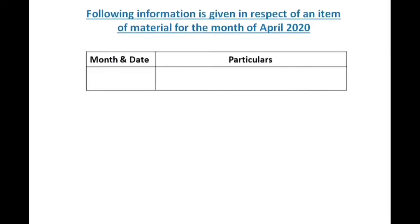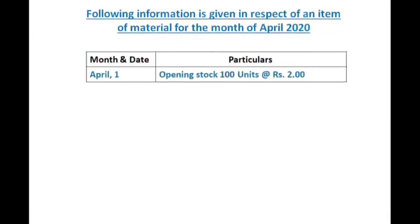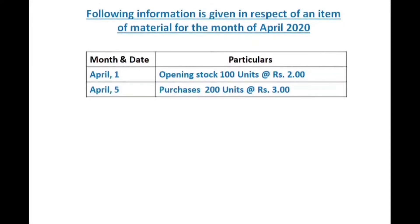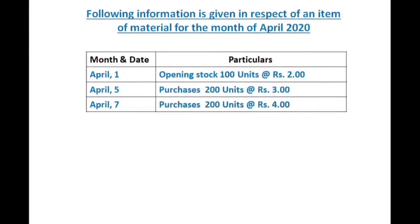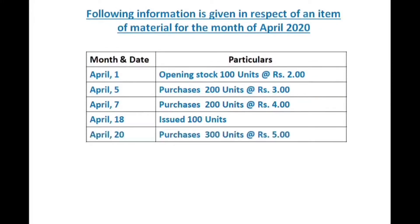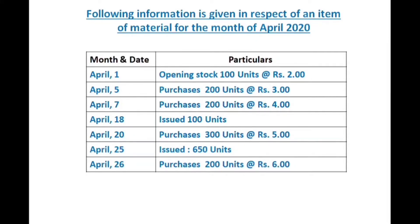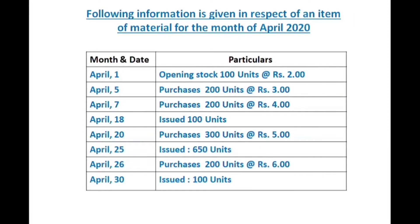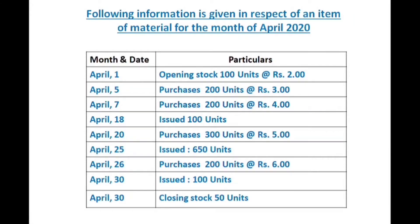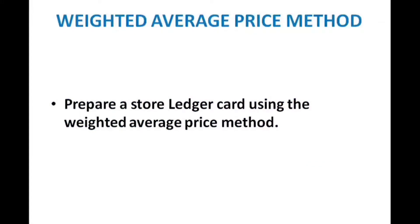The following information is given in respect of an item of material for the month of April 2020. April 1: Opening Stock 100 units each 2 rupees. April 5: Purchases 200 units each 3 rupees. April 7: Purchases 200 units each 4 rupees. April 18: Issued 100 units. April 20: Purchases 300 units each 5 rupees. April 25: Purchases 500 units. April 25: Issued 650 units. April 26: Purchases 200 units each 6 rupees. April 30: Issued 100 units. April 30: Closing Stock 50 units. Prepare the store ledger card using the weighted average price method.